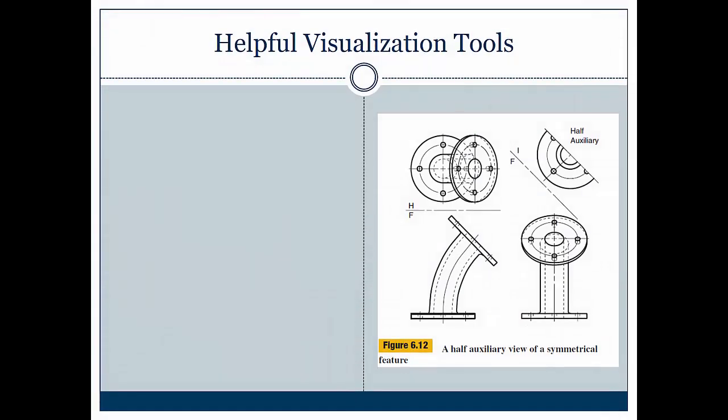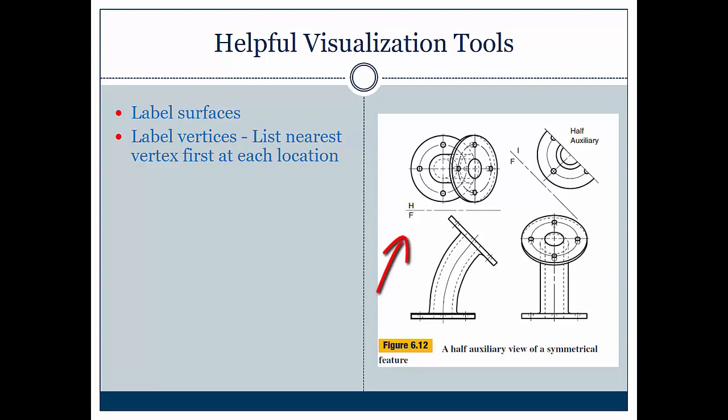Some helpful visualization tools involve labeling the surfaces. Generally, if we do this, this can help us expedite auxiliary views. Label different vertices. List the nearest vertex at each location. Generally, whenever we're doing this, you notice that I referenced a whole lot of the vertices by different letters. If we do that whenever we're creating an auxiliary view, that can give us some perspective.